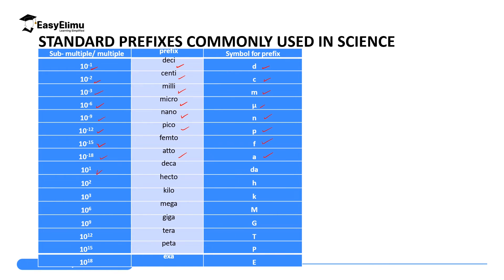For positive powers: 10 to the power 1 is deca, symbol da. 10 to the power 2 is hecto, symbol h. 10 to the power 3 is kilo, symbol k — so 1k means 1000, or 10 to the power 3. 10 to the power 6 is mega, symbol capital M — mega means one million. 10 to the power 9 is giga, symbol capital G. 10 to the power 12 is tera, symbol capital T. 10 to the power 15 is peta, symbol capital P. 10 to the power 18 is exa, symbol capital E.